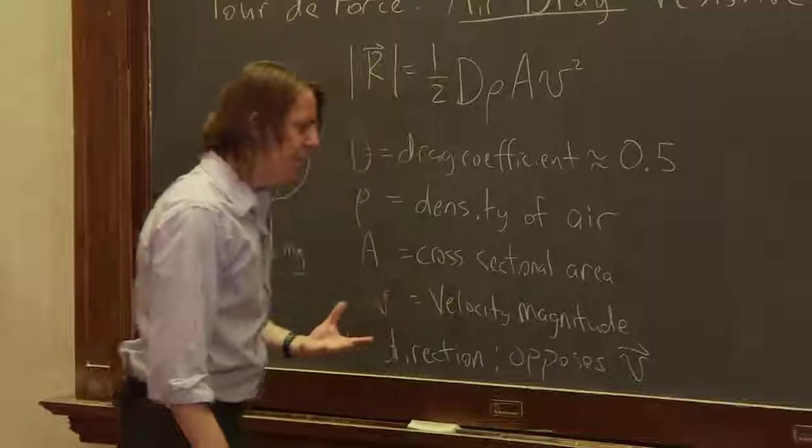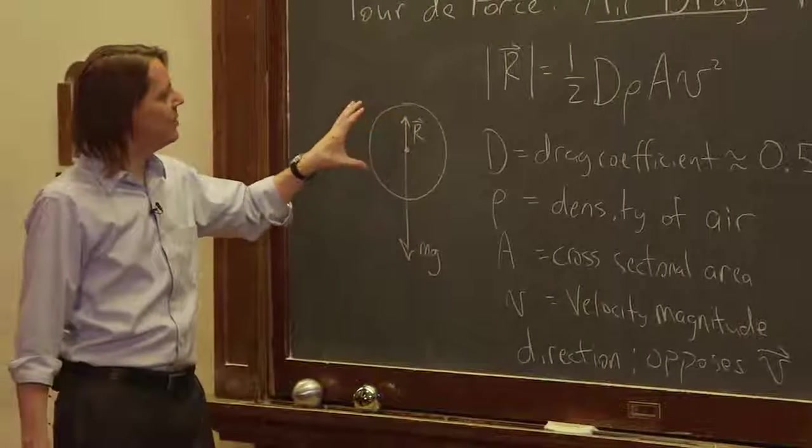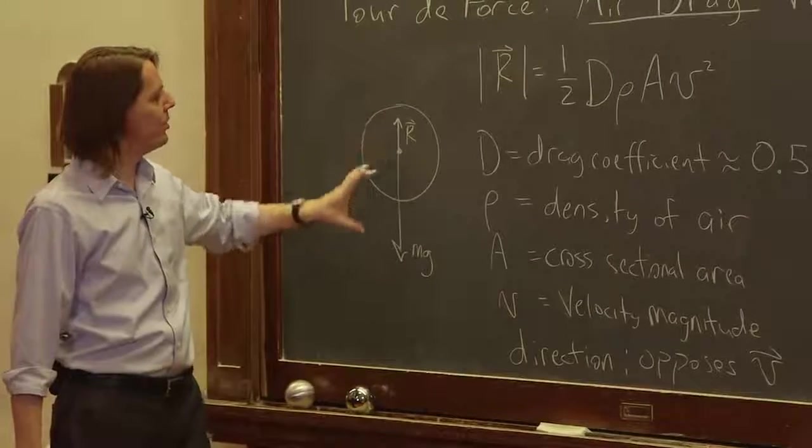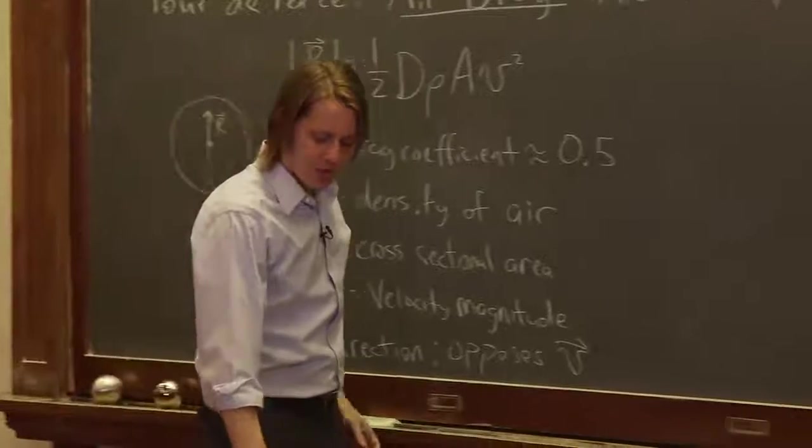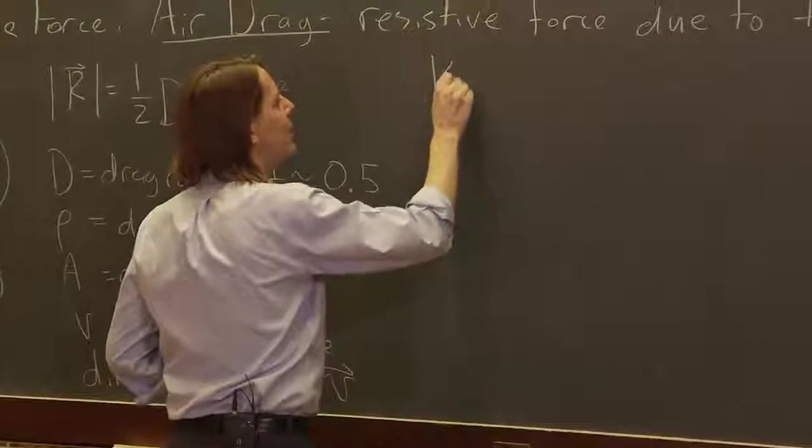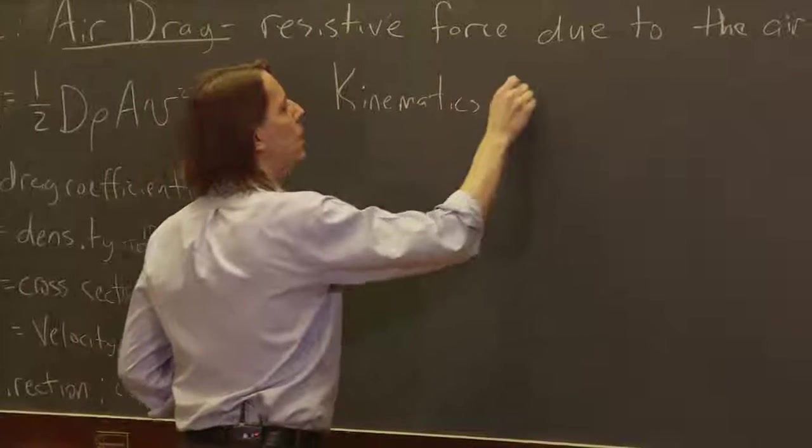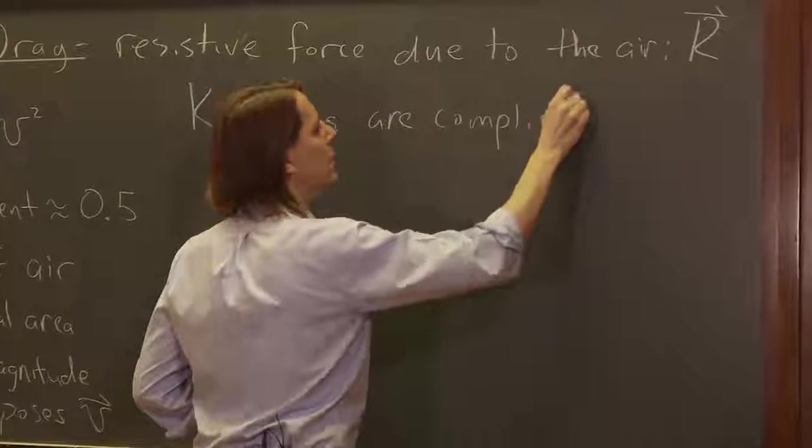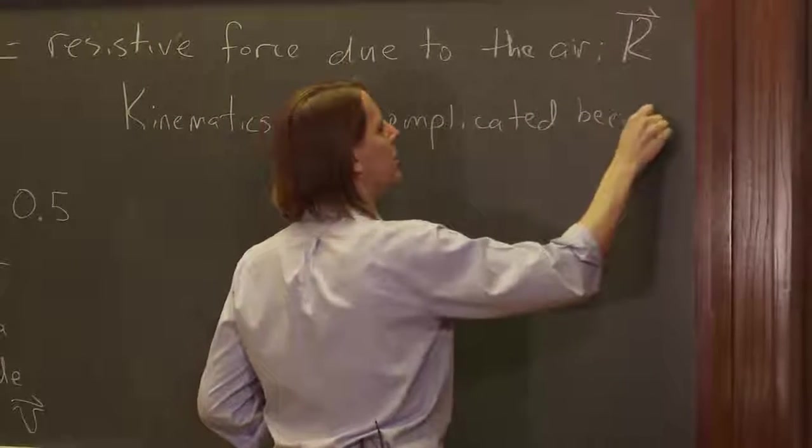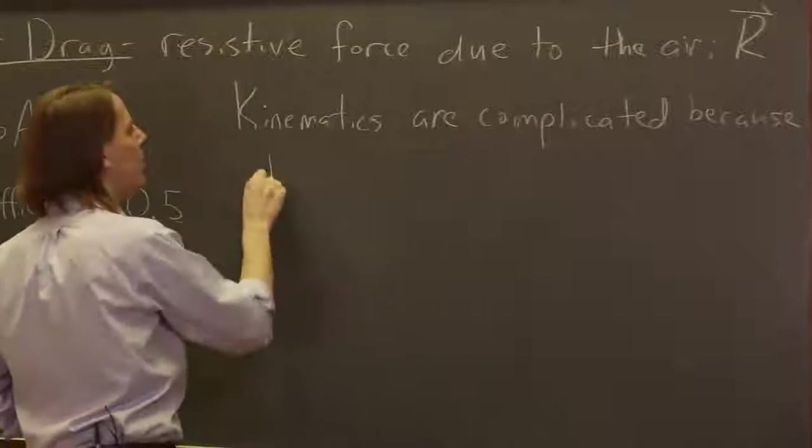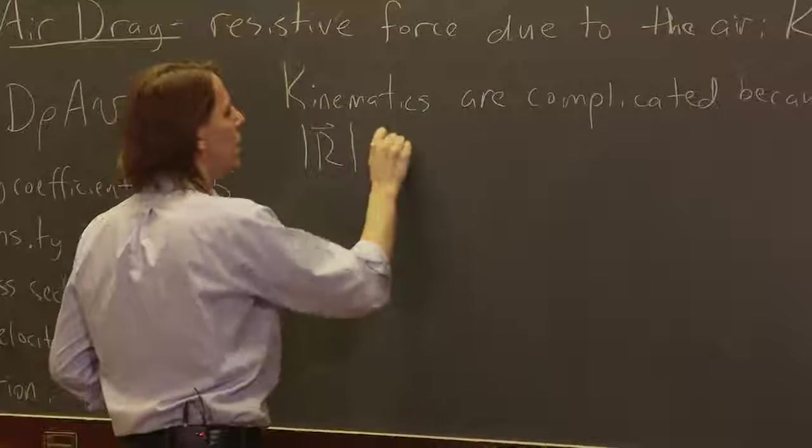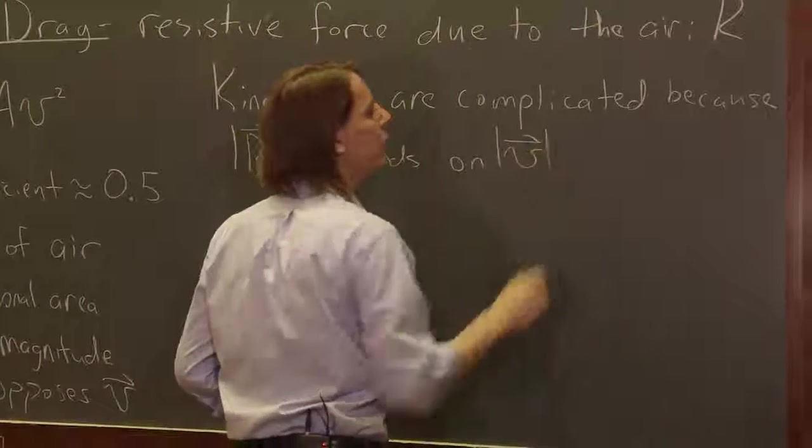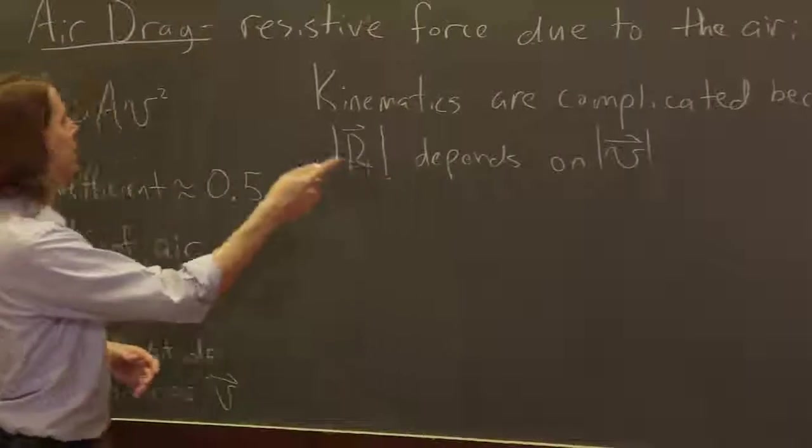So we know that this is going to oppose the motion, and if the object is light, it can actually become significant. The air drag can become as large as the weight. The kinematics are complicated because R, the magnitude of R, depends on the magnitude of v, actually the magnitude of v squared.